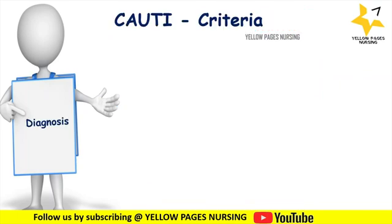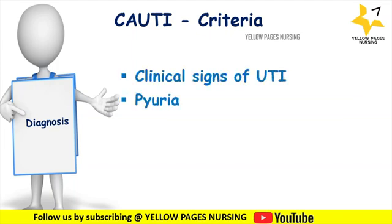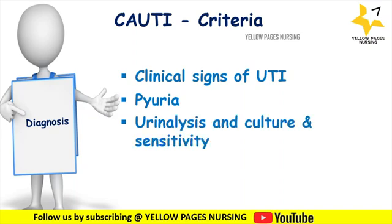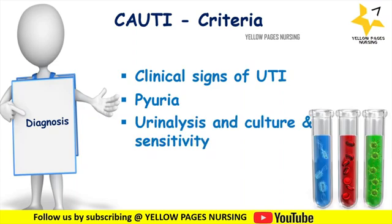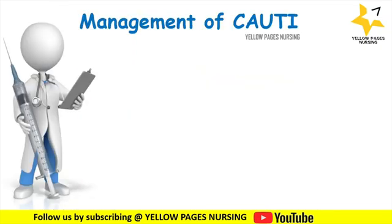Diagnostic criteria for CAUTI include clinical signs of urinary tract infection, pyuria (pus in the urine), urinalysis, and culture and sensitivity where the patient has a urine culture with no more than two species of organisms. For more details you can refer to the CDC.